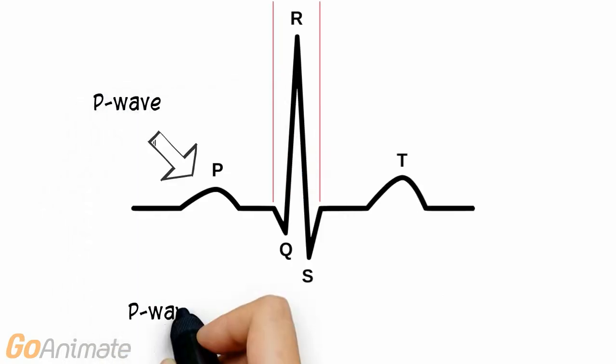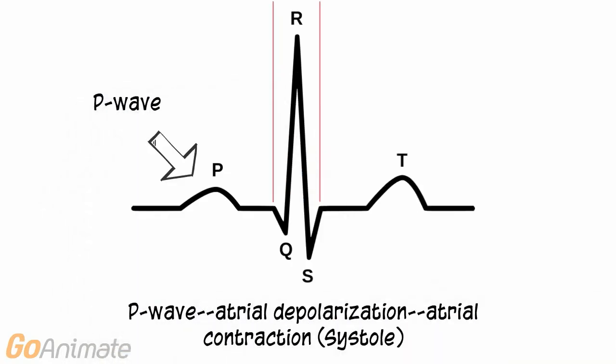The first bump is called the P wave. The P wave represents atrial depolarization. Depolarization occurs during contraction or systole.